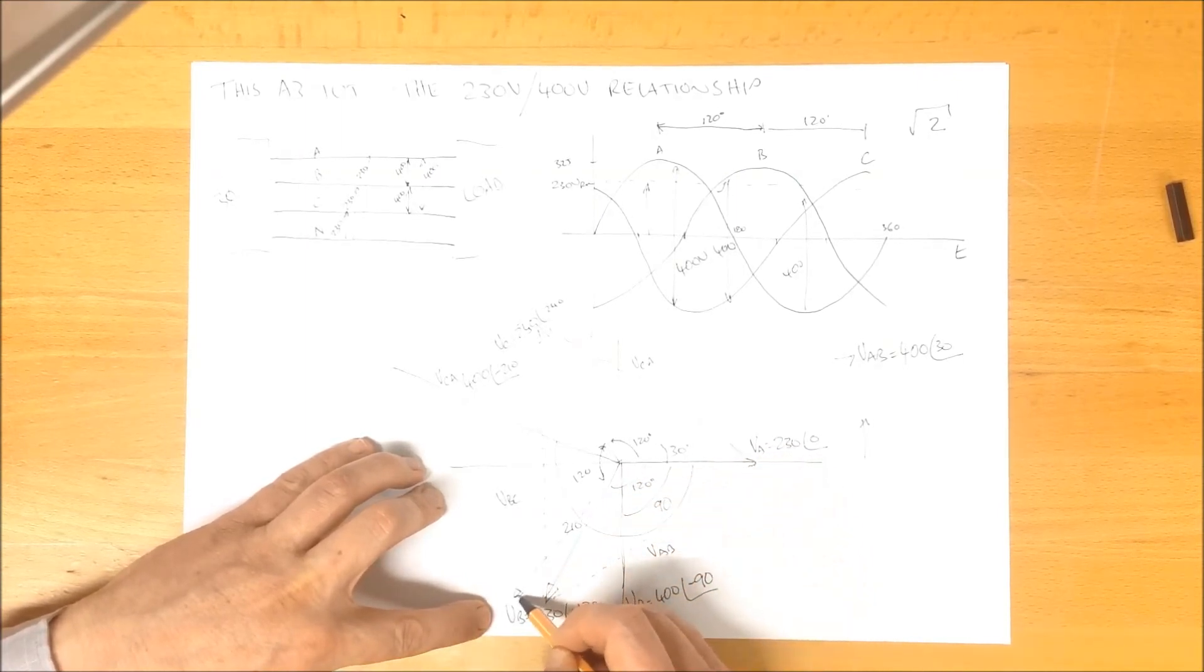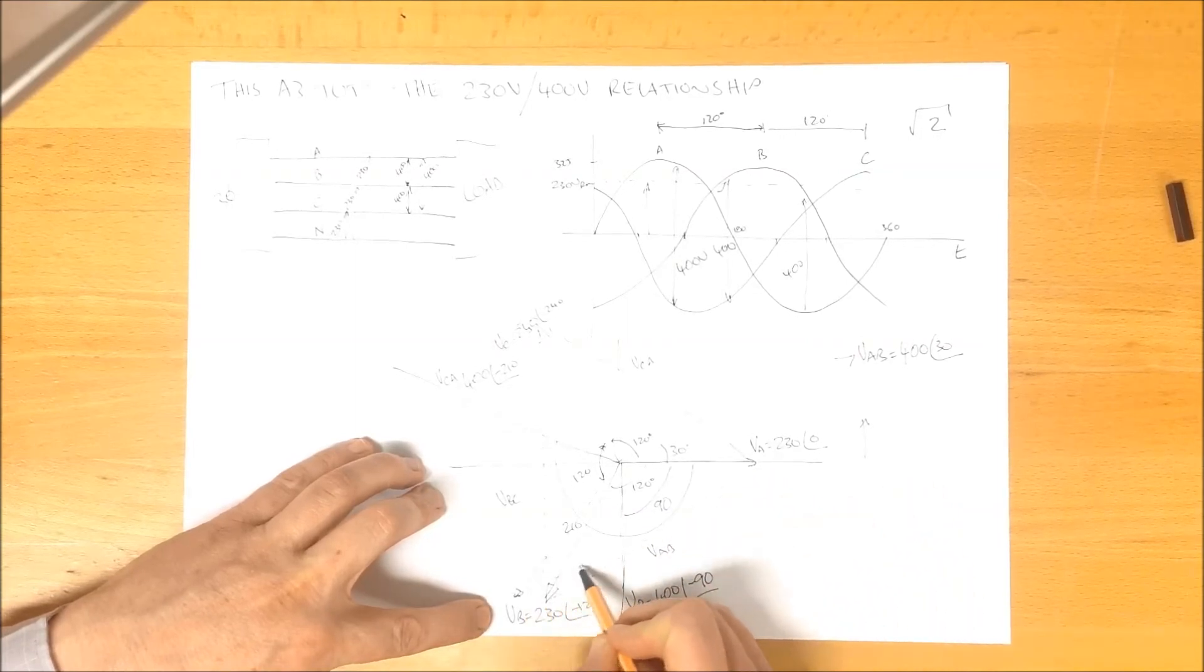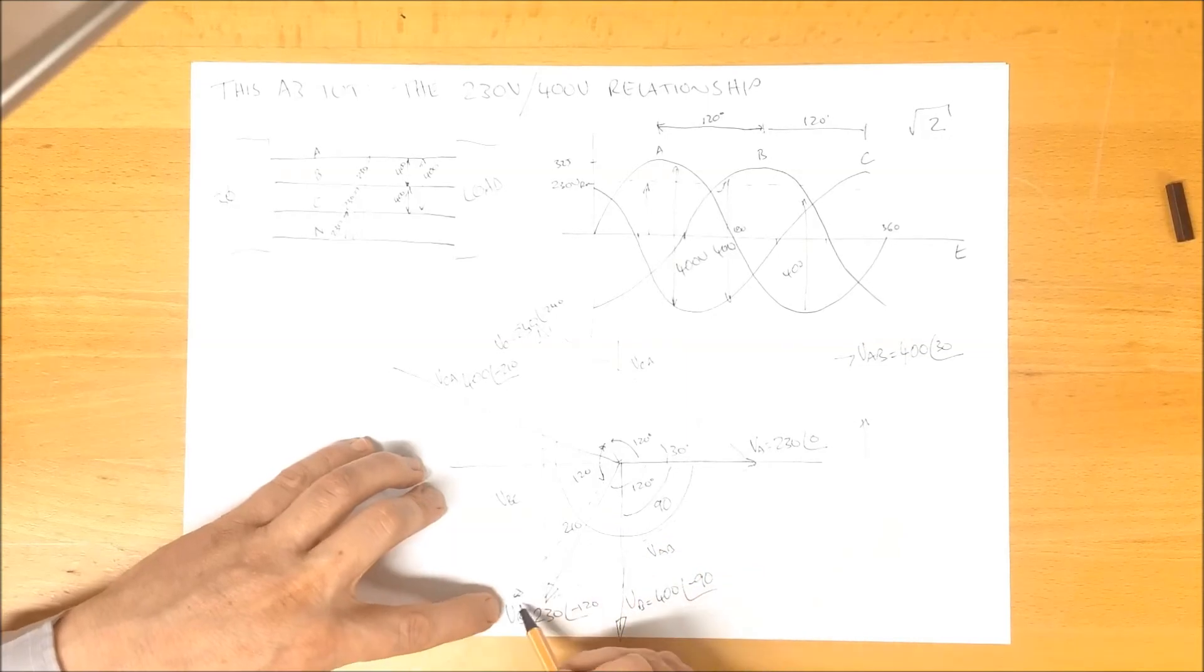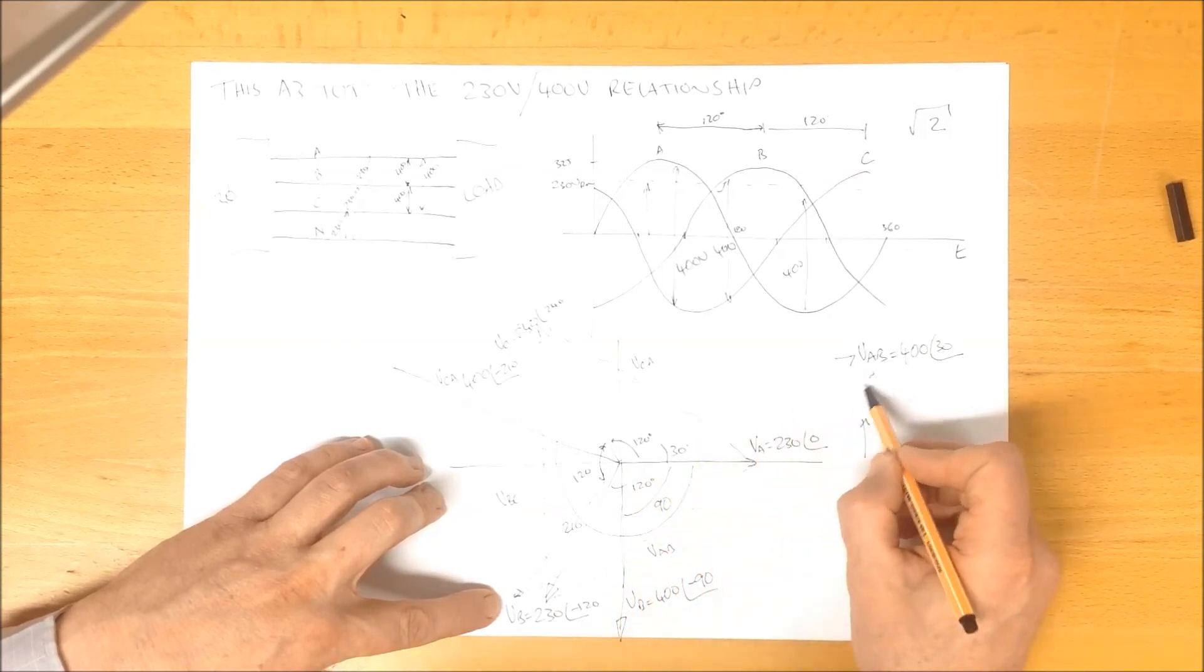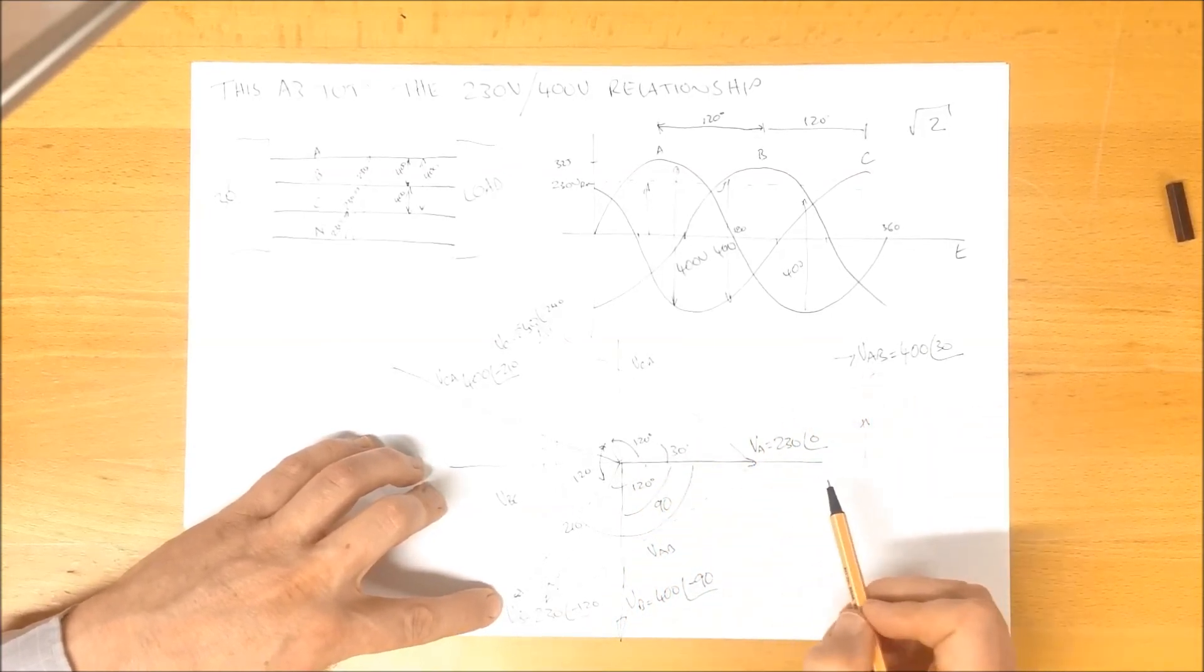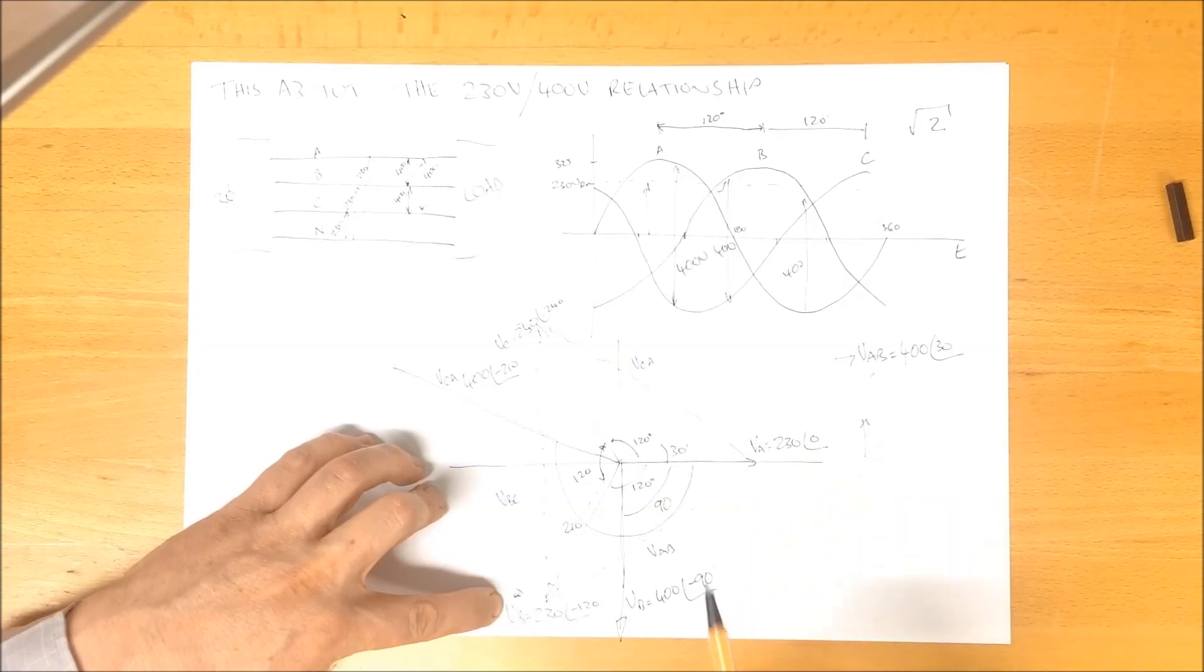If VAB was actually out here, VAB would not be this line, but it would rather be this one here. Our magnitude of VAB would change, as well as our angle. We would end up with something like that, and the numbers would change, and the root 3 rule would not apply.